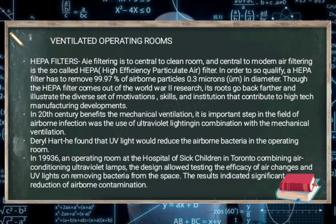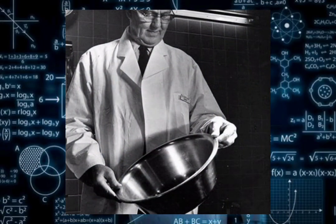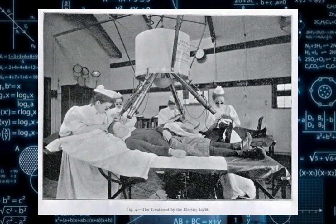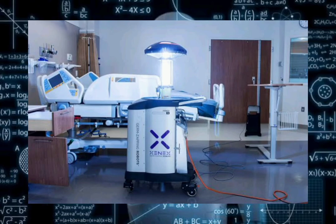In the 20th century, an important development in the field of airborne infection was the use of ultraviolet lighting in combination with mechanical ventilation. Daryl Hart found that UV light would reduce airborne bacteria in the operating room. In 1936, an operating room at the Hospital for Sick Children in Toronto combining air conditioning and ultraviolet lamps allowed testing the efficacy of air changes and UV lights in removing bacteria from the space. The results indicated significant reduction of airborne contamination.